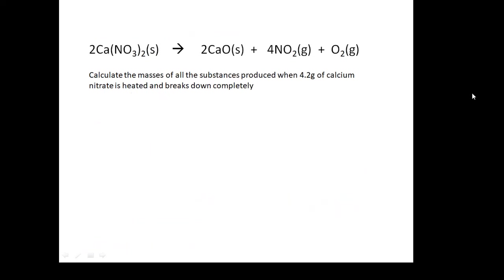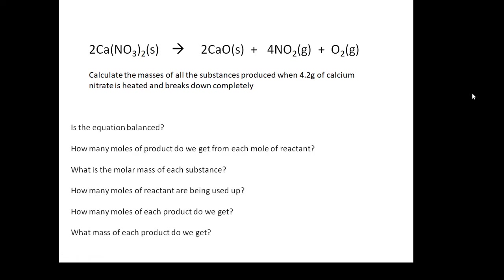Here's one for you to do. Is the equation balanced? Check that it's balanced — it should be. How many moles of product do we get from each mole of reactant? Look at the numbers at the front: 2 goes to 2 plus 4 plus 1. What is the molar mass of each substance? How many moles of reactant are being used up? How many moles of each product do we get? What mass of each product do we get?